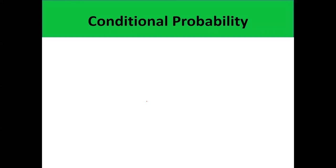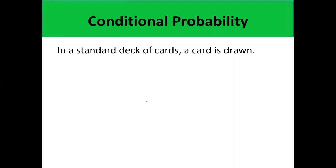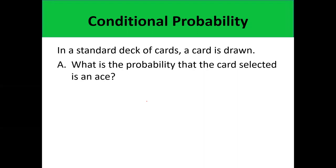For the understanding of conditional probability, let us consider the following scenario. In a standard deck of cards, a single card is drawn. What is the probability that the card selected is an ace? Since a single card is drawn, the sample space would be the 52 playing cards. So the probability that the card selected is an ace would be 4 out of 52, since there are four aces in the standard deck.